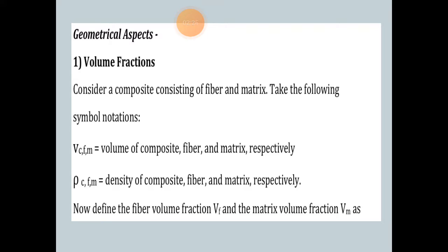Consider a composite consisting of fiber and matrix. Take the following symbol notation: V_C for volume of composite, V_F for volume of fiber, and V_M for volume of matrix. Also, rho_C, rho_F, and rho_M are the densities of the composite, fiber, and matrix respectively.